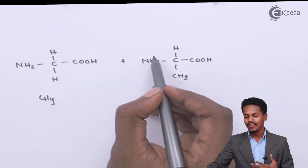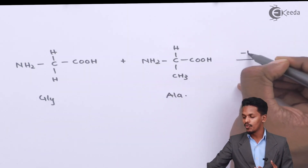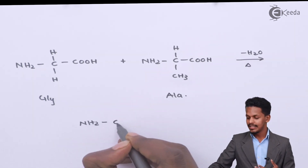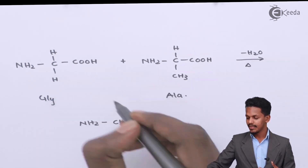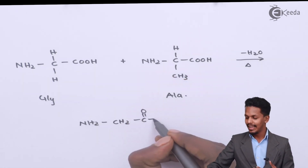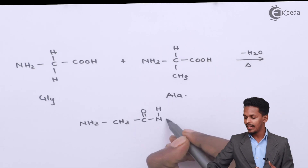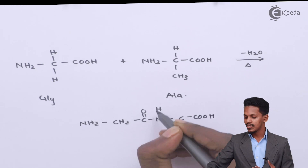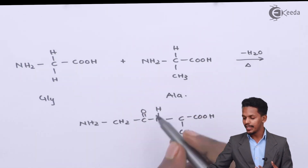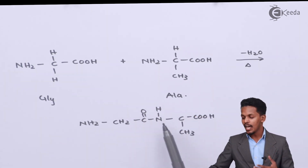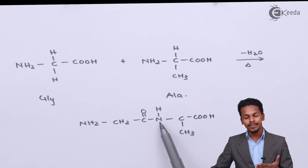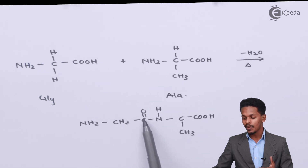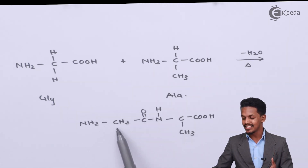Obviously there will be removal of water and the product we could get is NH2-CH2-C(=O)-NH-CH(CH3)-COOH. So this is the peptide linkage obtained, where the carbon next to the nitrogen has CH3 and the carbon next to the peptide linkage on the other side has CH2.